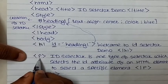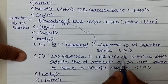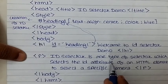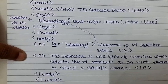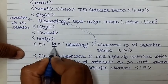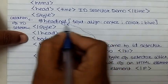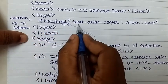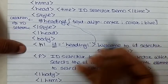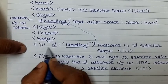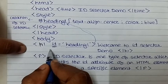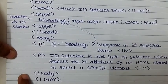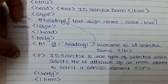Next, use a P tag for paragraph to display information about the ID selector: 'ID selector is one type of selector which selects the ID attribute of an HTML element to select a specific element.' Then close the body and HTML tags. The key new line is the H1 tag with ID attribute set to 'heading1'.